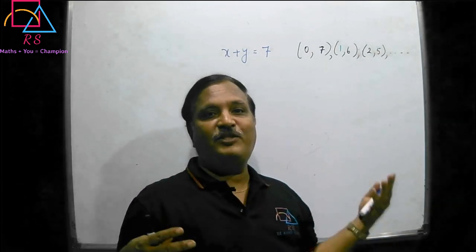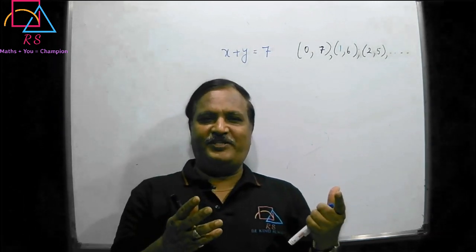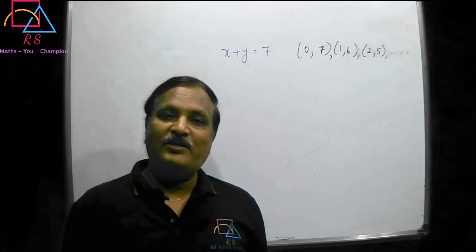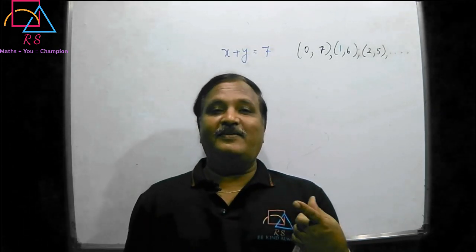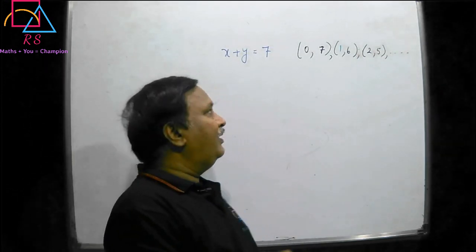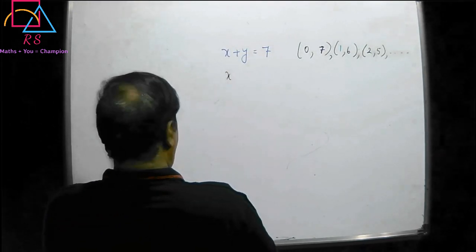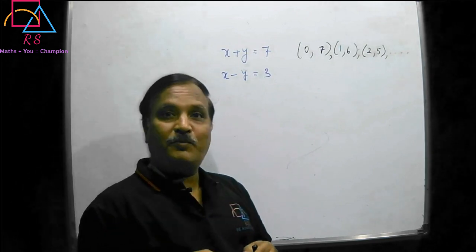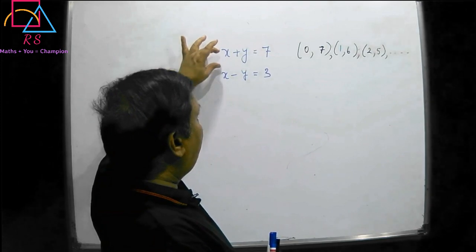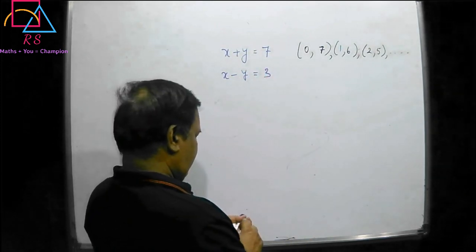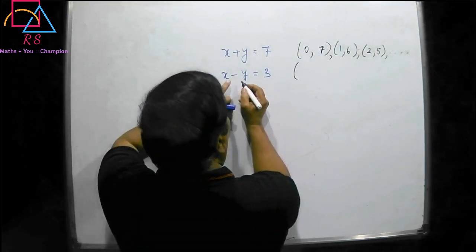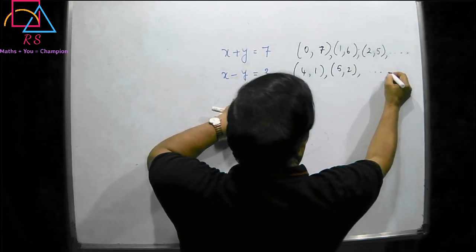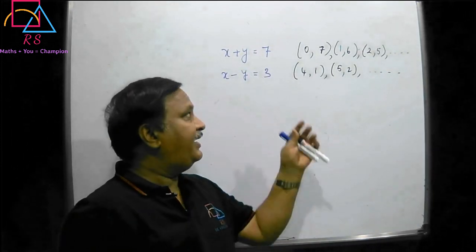We cannot manage with many solutions. If there is a situation with two variables and only one equation, you will be getting many solutions. But we need only a unique solution. So for that, we need one more equation to satisfy the system. So I will write one more equation: x minus y is equal to 3. This second equation also has many solutions, like (4,1), (5,2), and so on.